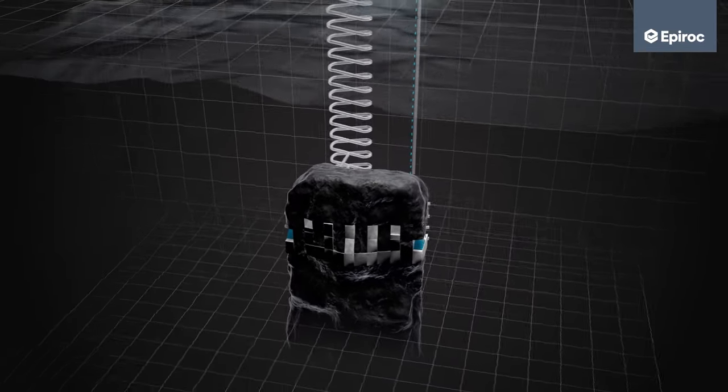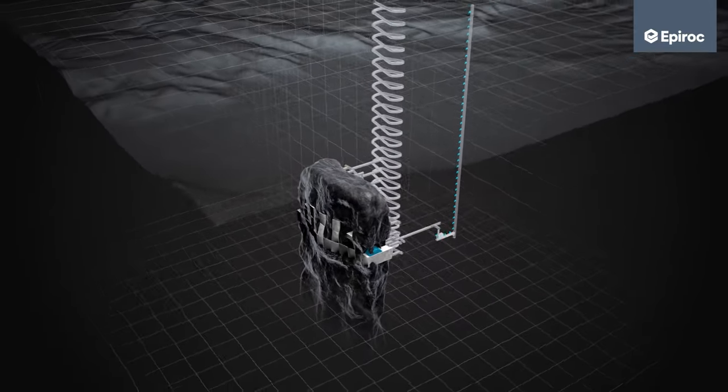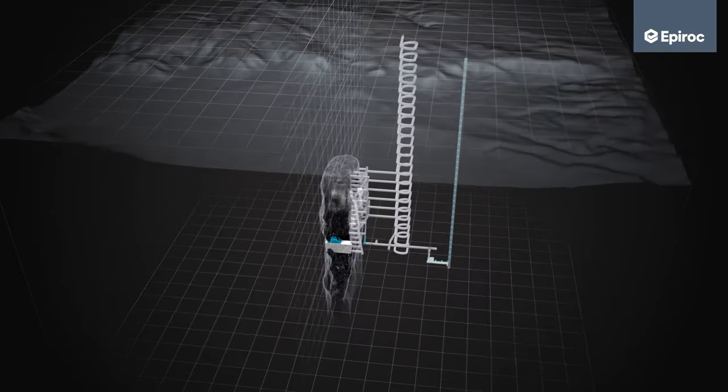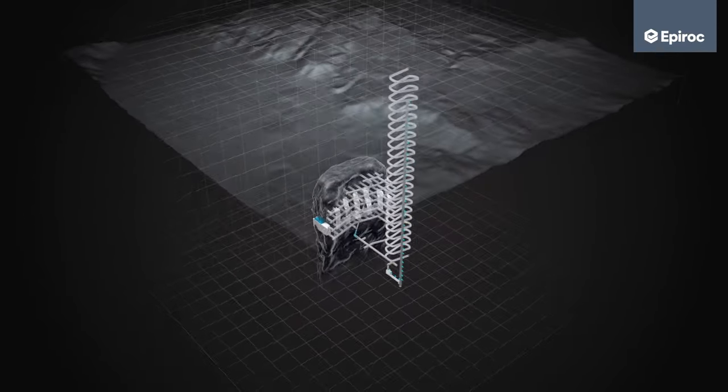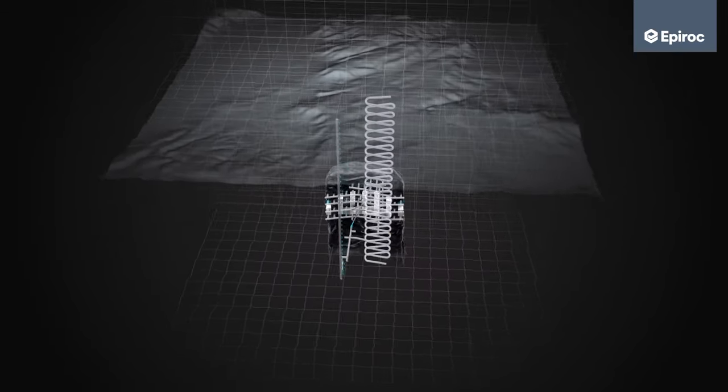Sub-level stoping is a productive large-scale mining method that enables a multitude of production points in operation at the same time, offering good productivity and low dilution.